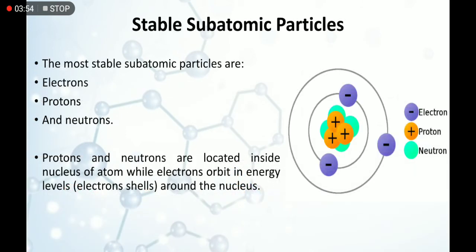Stable subatomic particles are electrons, protons, and neutrons. We have three stable subatomic particles. Protons and neutrons are located inside the nucleus of an atom, while electrons orbit in energy levels around the nucleus.